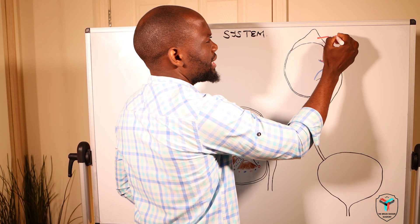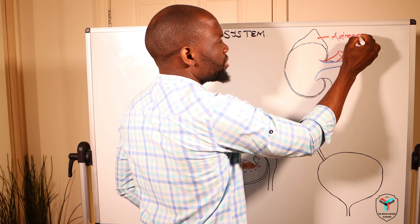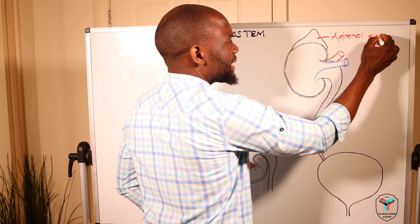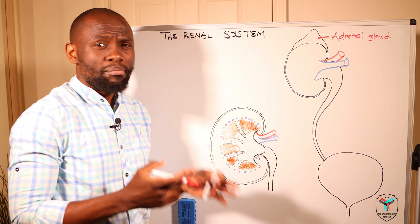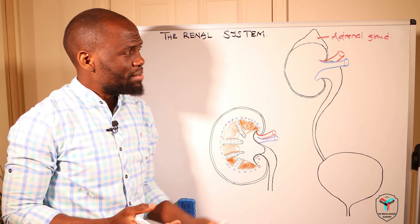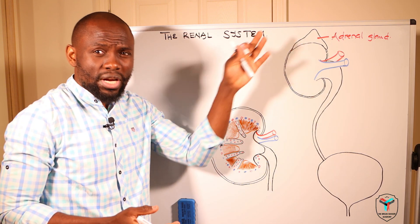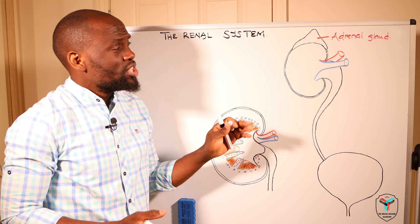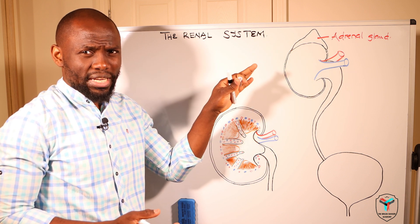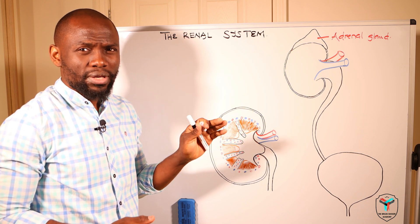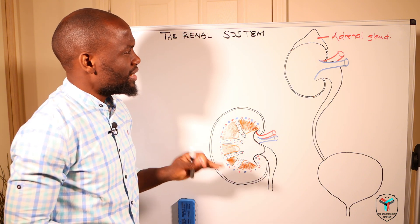The suprarenal gland, also referred to as the adrenal gland, is an important gland because it plays a key role in the maintenance of blood pressure. You have aldosterone coming from there, epinephrine coming from there, and cortisol coming from there. We will look into more detail of the adrenal gland when we come to look at the endocrine system and its various glands.